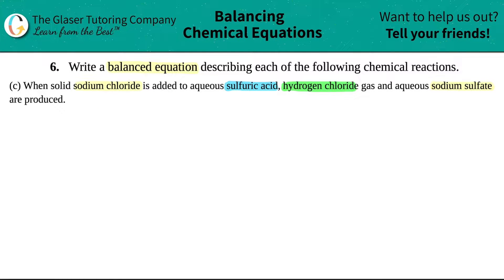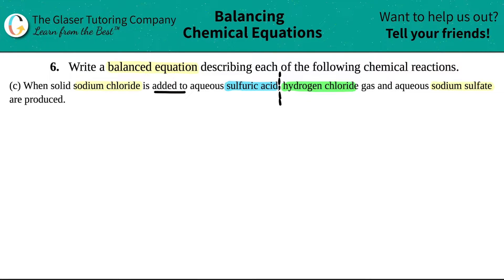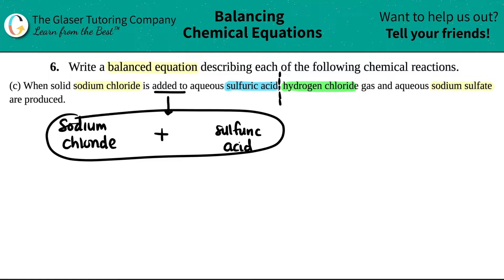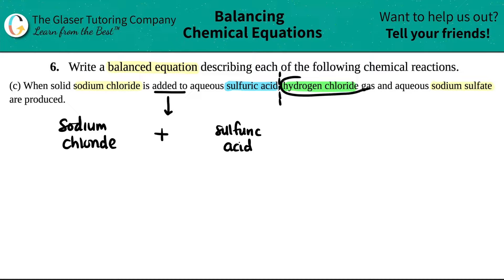Now we've got to write the balanced equation, so we've got to use our context clues. They said solid sodium chloride is added to aqueous sulfuric acid. So it seems to me that sodium chloride is being added to — addition plus — sulfuric acid. And what's going to happen when these two are added together? It says hydrogen chloride gas and aqueous sodium sulfate are produced.